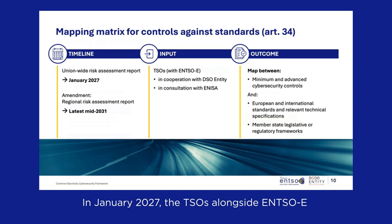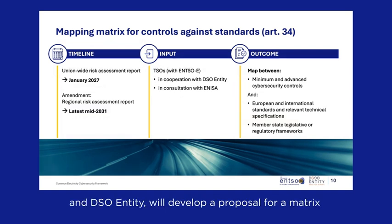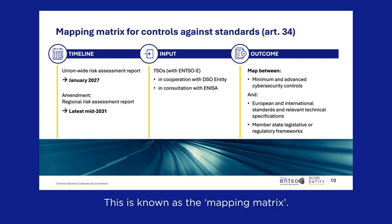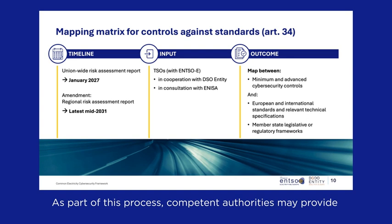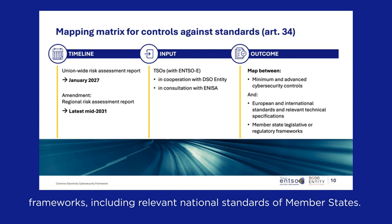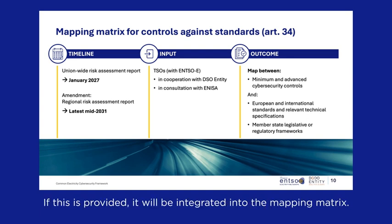In January 2027, the TSOs alongside ENTSO-E and DSO Entity will develop a proposal for a matrix to map the controls against selected European and international standards, as well as technical specifications. This is known as the mapping matrix. As part of this process, competent authorities may provide a map of controls relating to national legislative or regulatory frameworks, including relevant national standards of member states. If this is provided, it will be integrated into the mapping matrix.